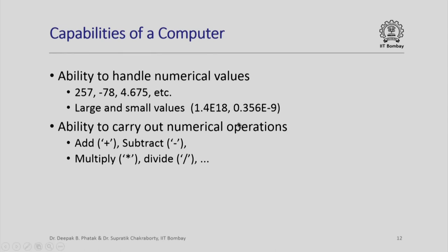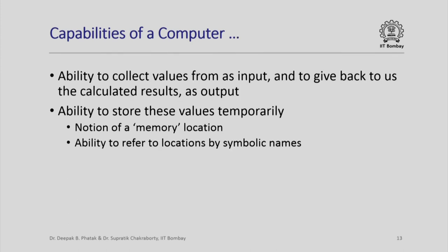A computer has the ability to carry out numerical operations — it can add, subtract, multiply, and divide. For addition, subtraction, and division we use the symbols plus, minus, and slash. For multiplication, most computers use the symbol star. This is because the letter x used for multiplication can be confused with the variable x in a program, so the star symbol is used instead. More importantly, a computer has the ability to collect values from us as input and to give back calculated results as output. It has the ability to store these values temporarily — so there will be a notion of a memory location, which we shall see in the next lecture. It also has the ability to refer to these locations by symbolic names.